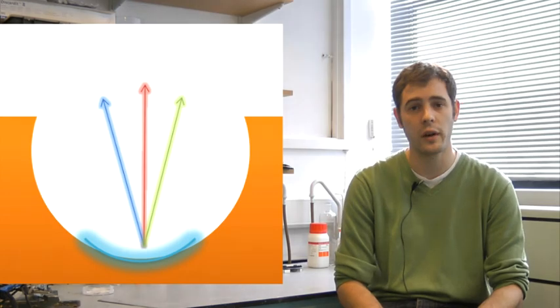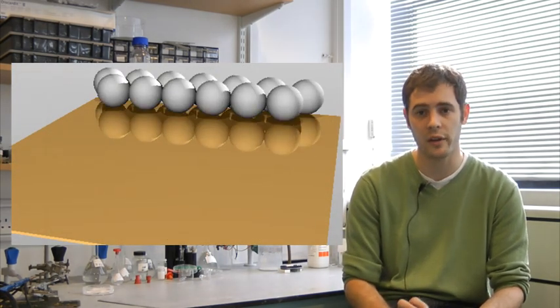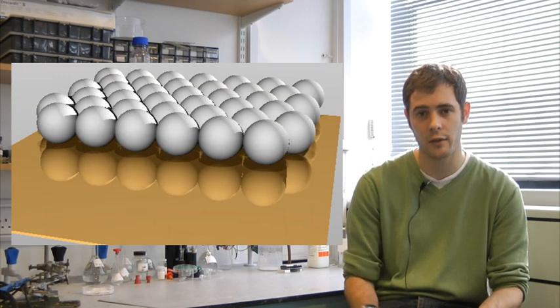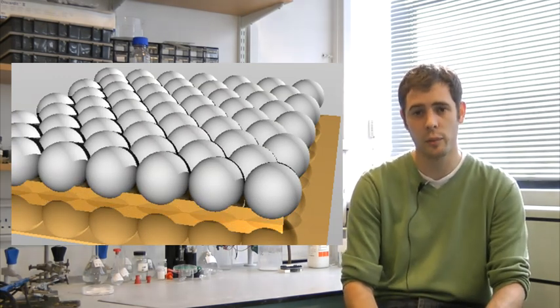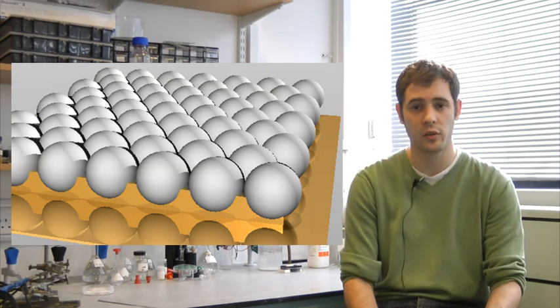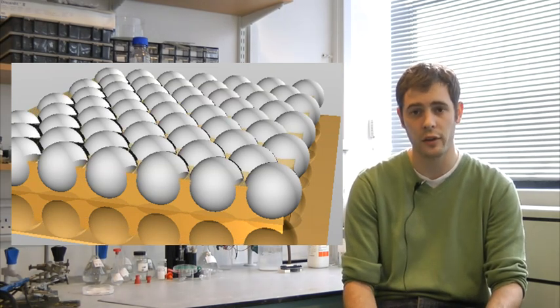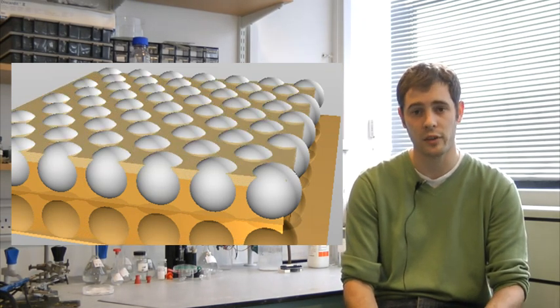My PhD uses something called sphere-segment-void substrates, or SSV for short. We make those by taking a gold slide, and we clean it, and then we place some polystyrene spheres onto it, which line up in a hexagonal array. We then place that in a gold plating solution, and we use electrochemistry to turn gold ions into gold metal, and we plate around the spheres.